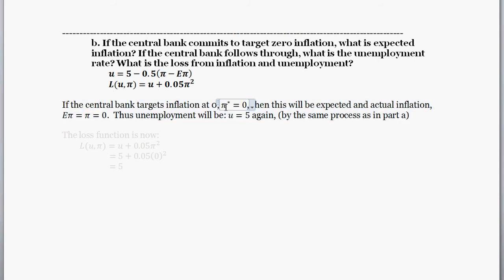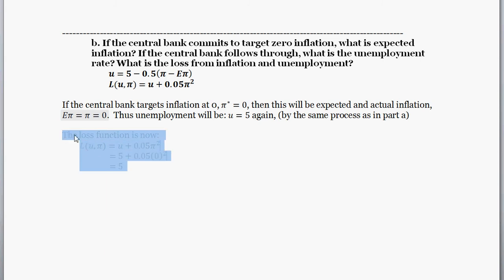If the central bank target is zero percent, then when people set their expectations they set it in line with that target rate, so expected inflation equals zero percent. And if the central bank follows through, realized inflation is also zero. So actual inflation is zero, expected inflation is zero — the whole deviation term goes to zero — and the unemployment rate is five percent again, same as in Part A. Plugging into the loss function: unemployment is five, realized inflation is zero, so the loss equals exactly five.